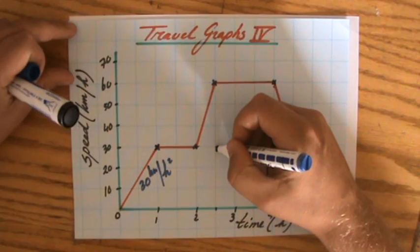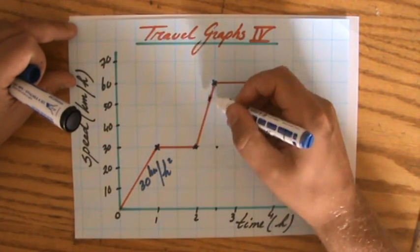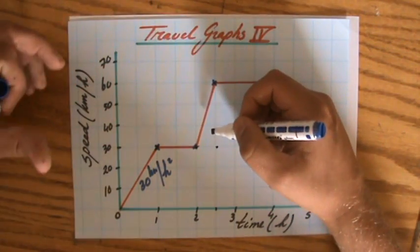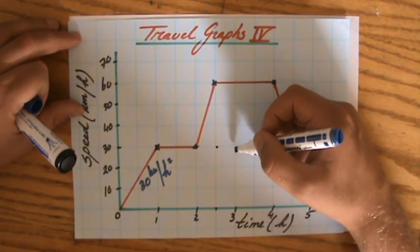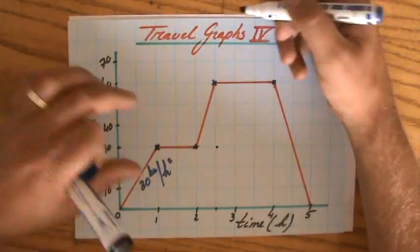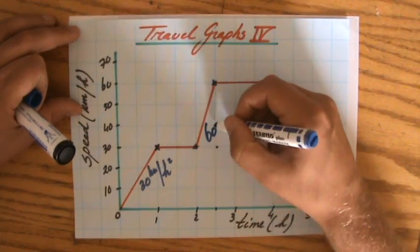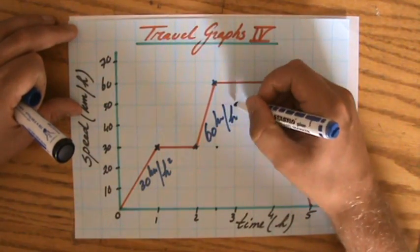In half an hour it is from 30 to 60, so that is a vertical difference of 30. So in one hour, where the gradient is one unit to the right, how many do you go up? It's going to be 60 kilometers per hour squared.